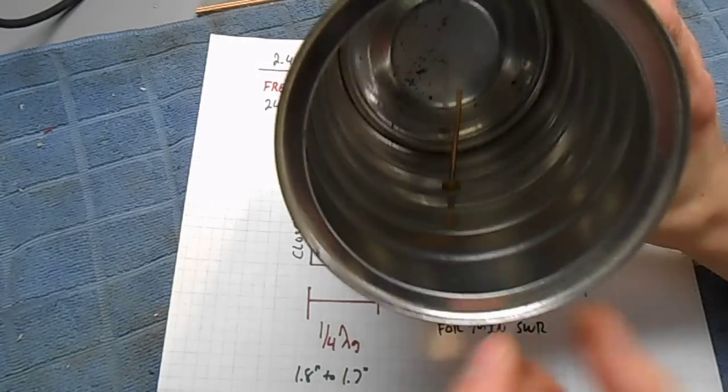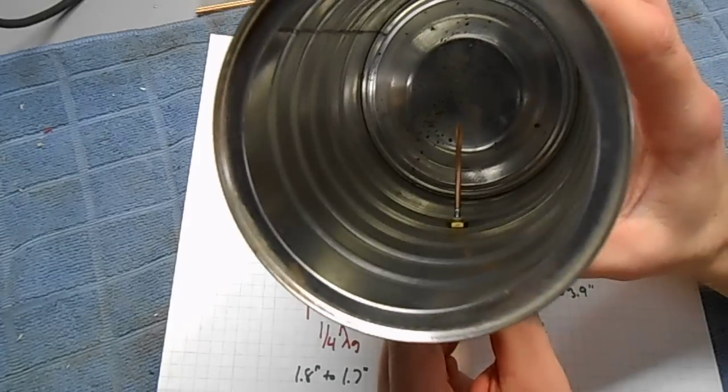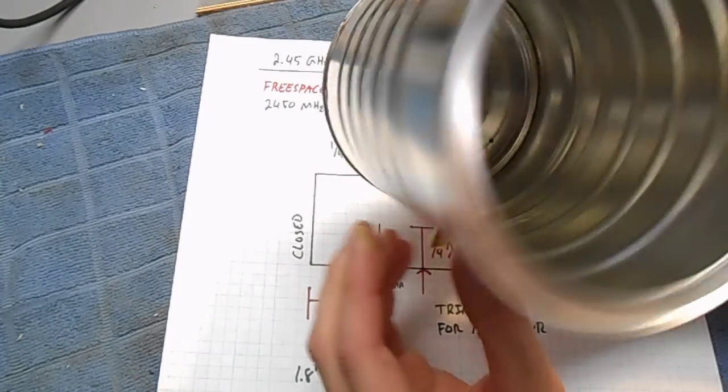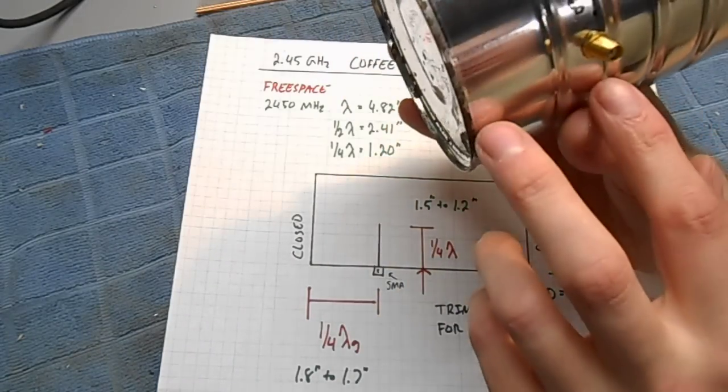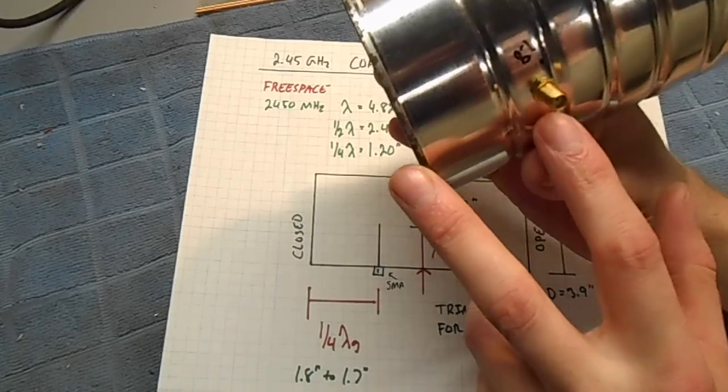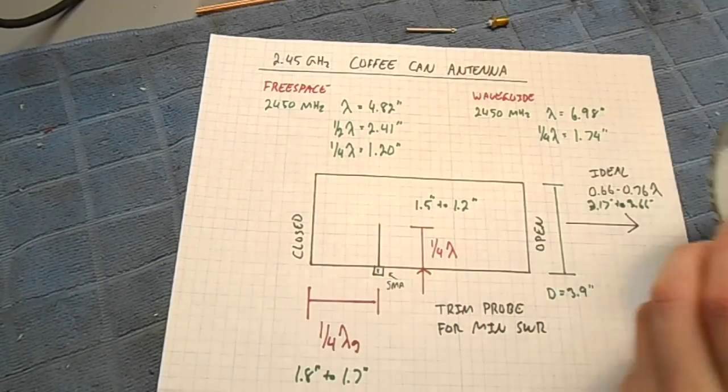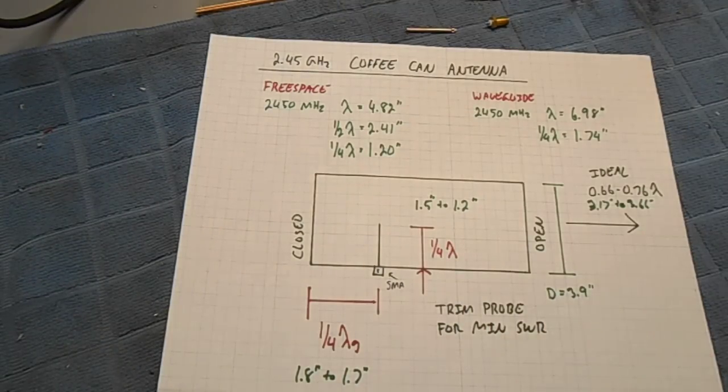A small little quarter wave probe antenna will be constructed and added into the can. The dimensions from the closed end of the can and the actual length of the probe antenna are what you need to construct.